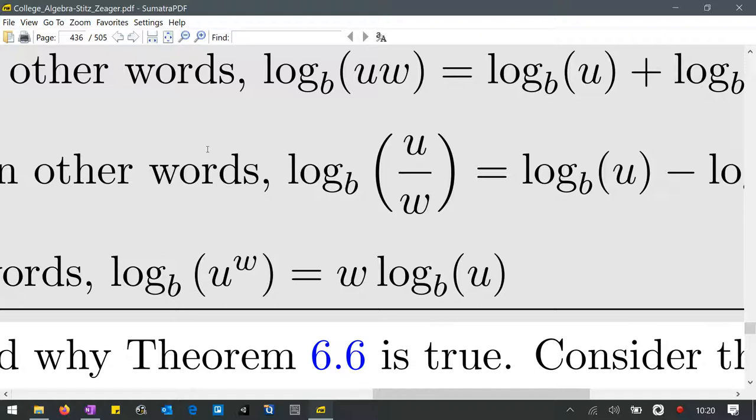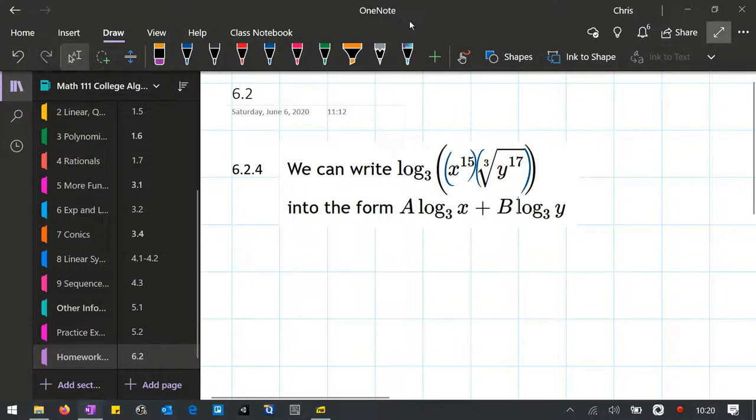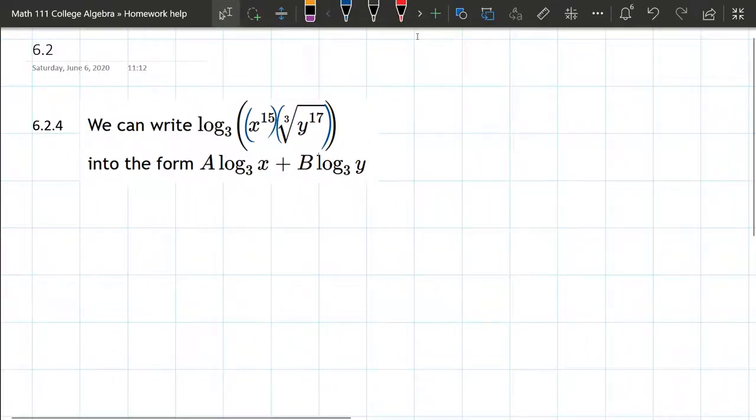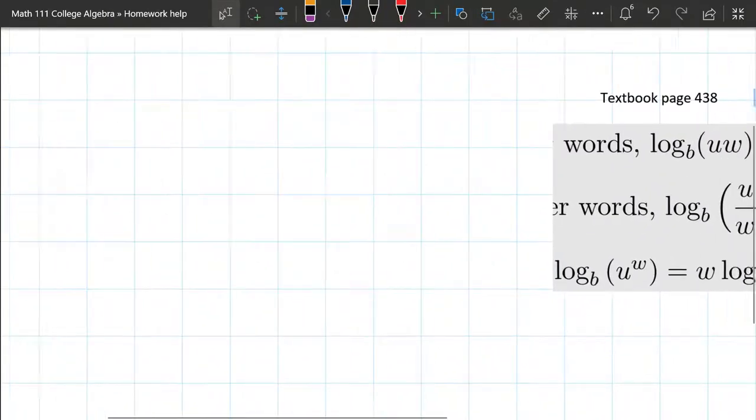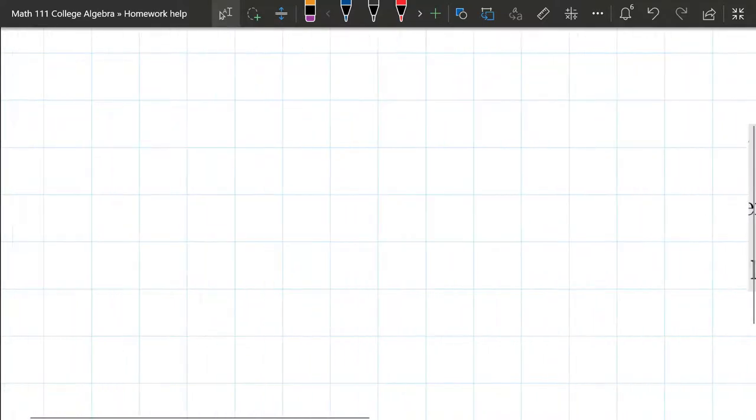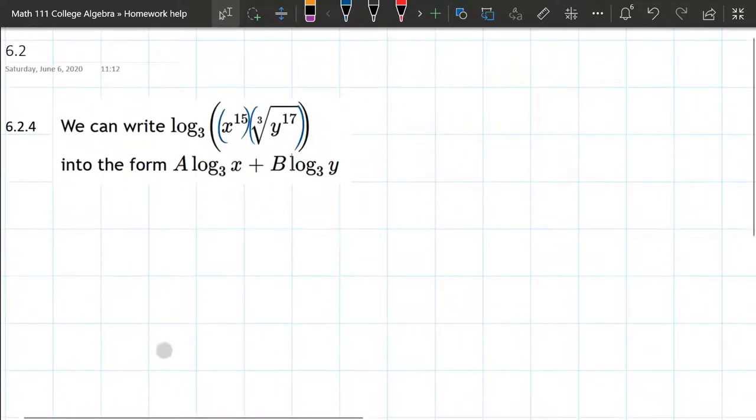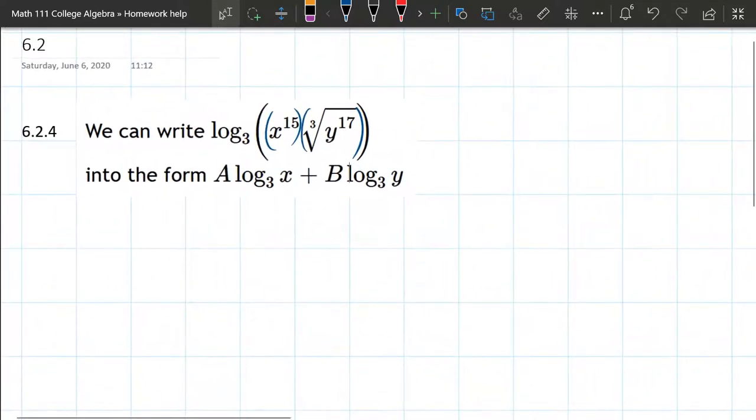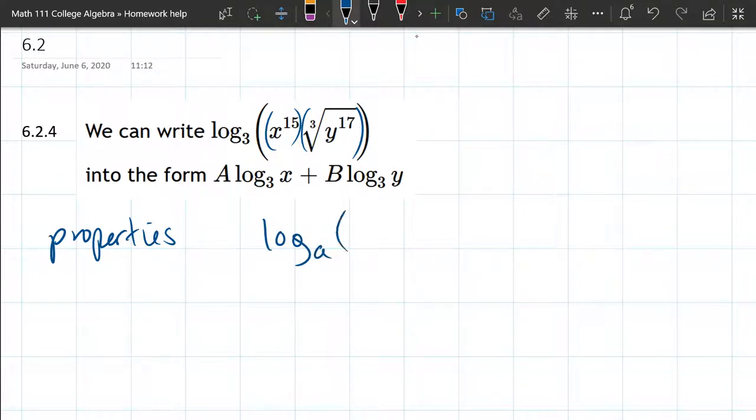So let's go ahead and rewrite the first and the last property. So I just had them copied and pasted right here, but I want to write them out. Every time you write something out, you're going to remember it a little bit better. So we got log, we usually use the letter A for a base. In this case, our base is going to be 3. So those use the letters U and W. So this is a product inside.